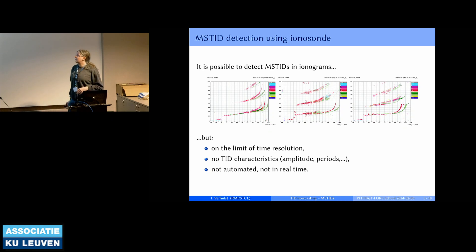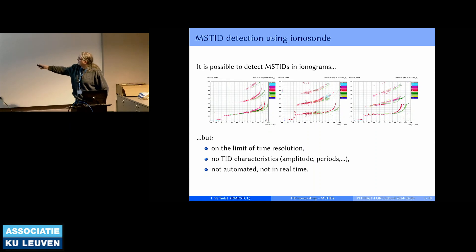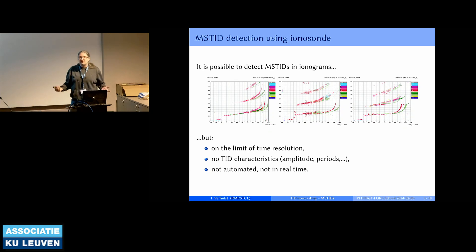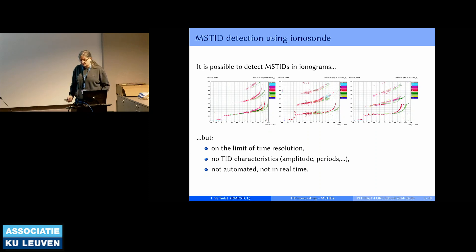There are other problems with using ionogram data for MSTID detection. You can detect the presence of these waves by looking at splittings of traces and little wiggles, but you don't really get much information beyond just whether something was there. You don't get a period, you don't get an amplitude, and you don't get a propagation direction.